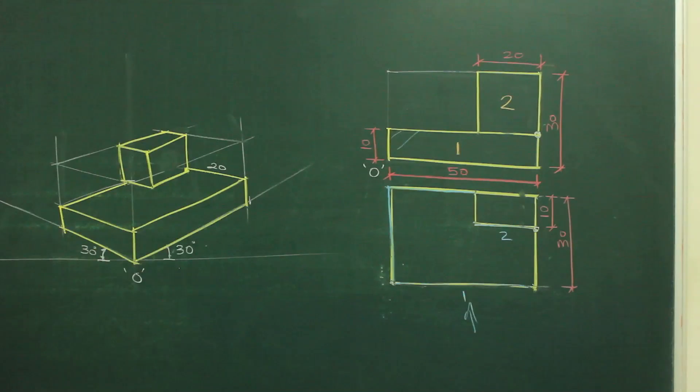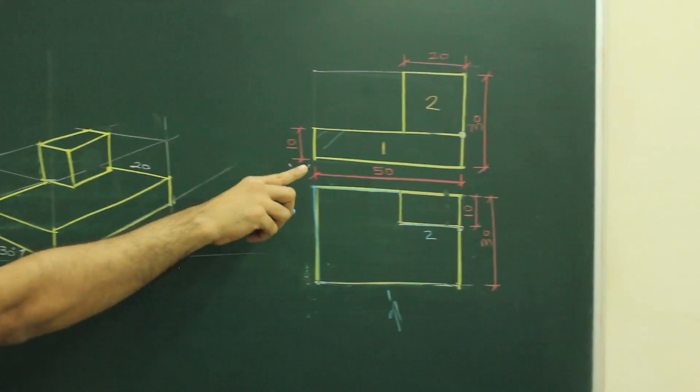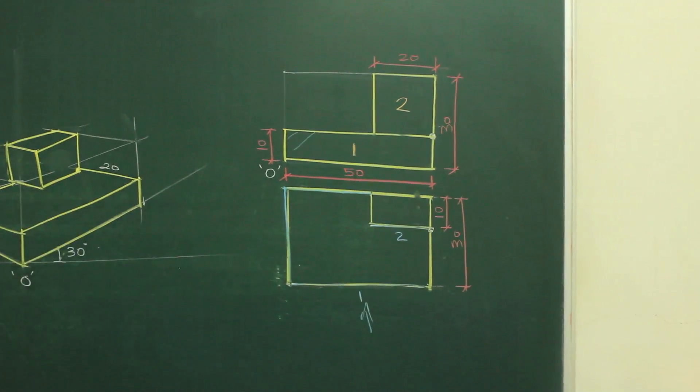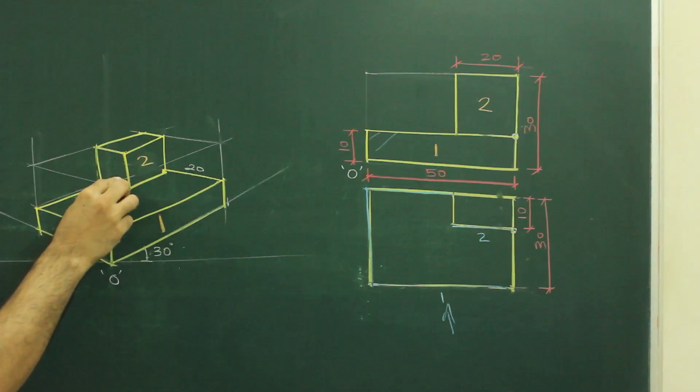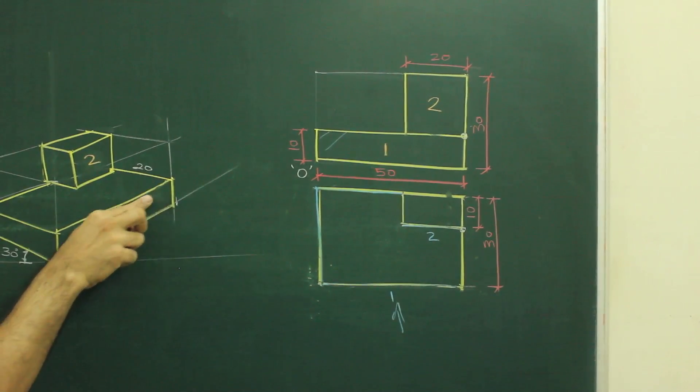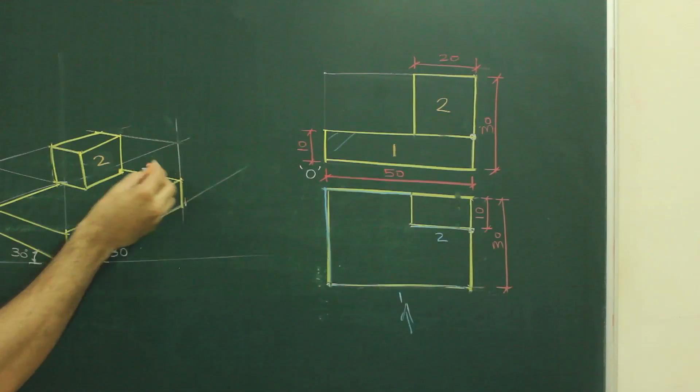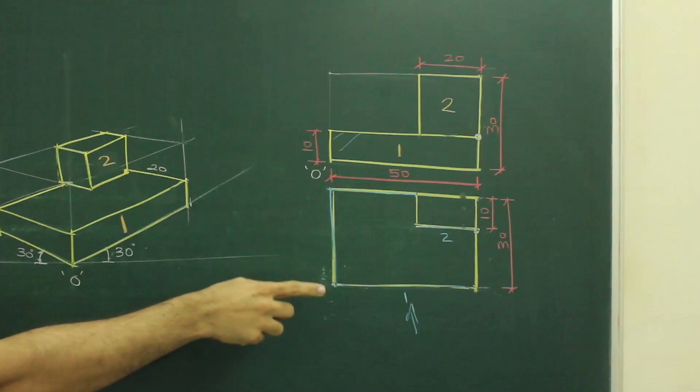So now if you see the main diagram, see there are two parts, part 1 and part 2. So this is your part 1, this is your part 2. And if you observe, there is a dark line, so that is this line. Now how much it is behind, that we came to know from top view.